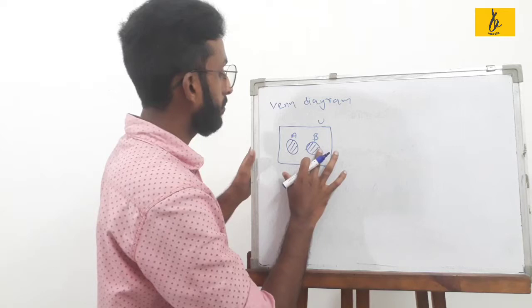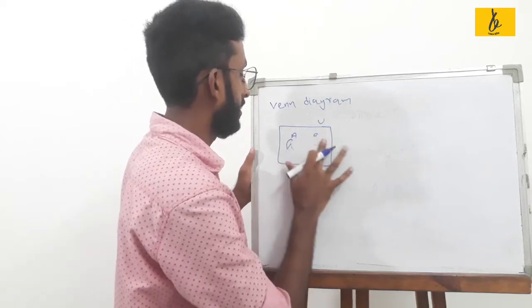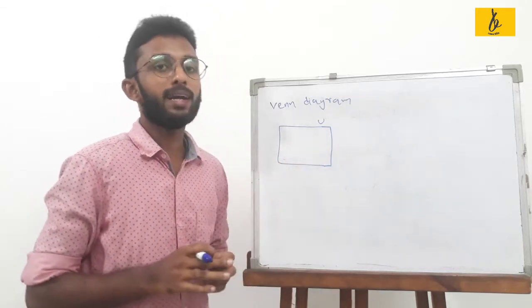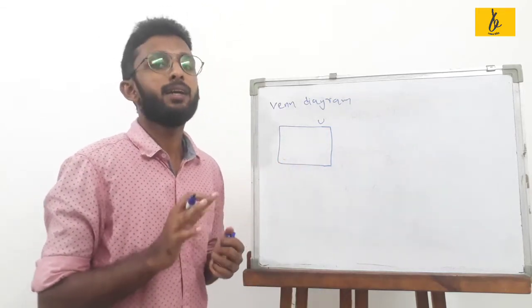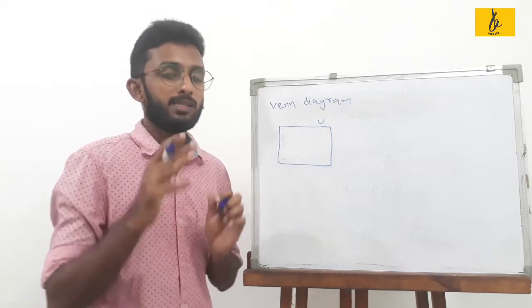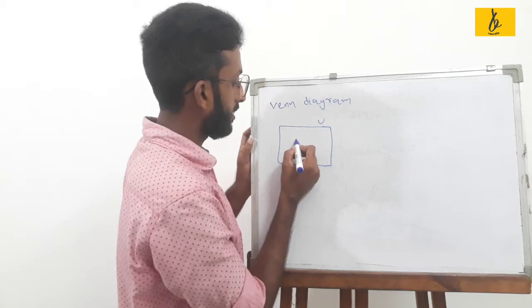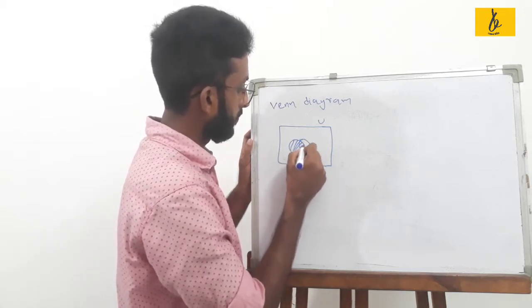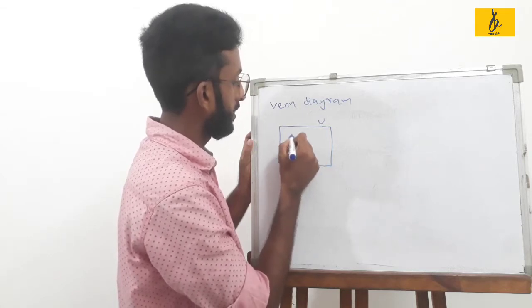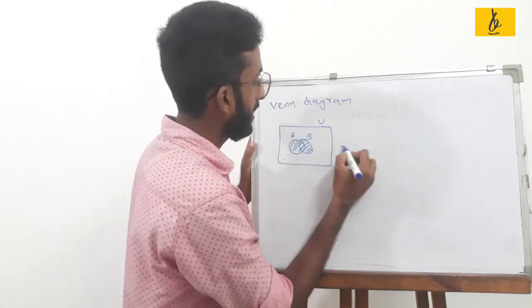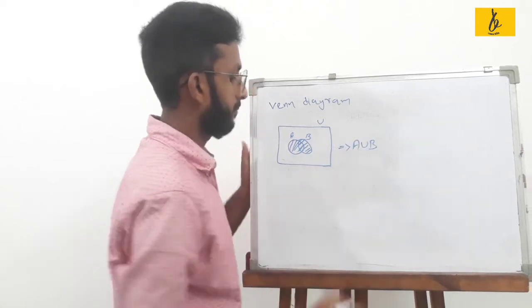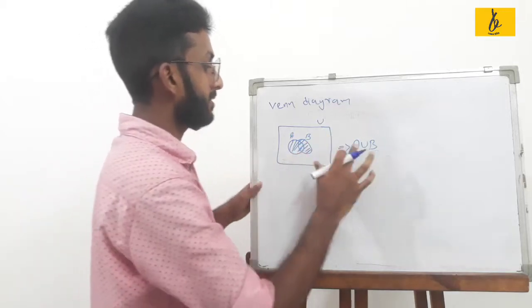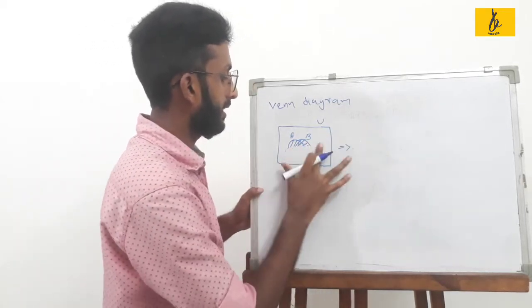How do we represent A union B? A union B. A union B.